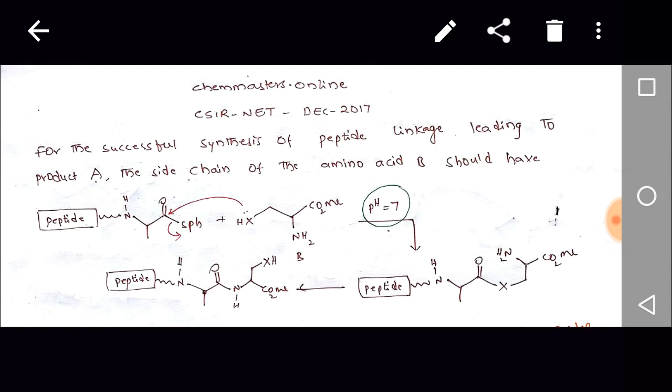So just look at the given reaction. In that, the B amino acid is the X acting as nucleophile, and at pH 7 we get the product.